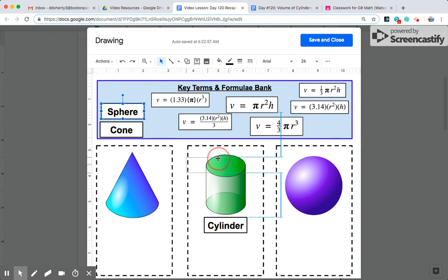A sphere is one of these circles in three dimensions. It's a perfect ball. Things like a soccer ball, a basketball would be considered a sphere.